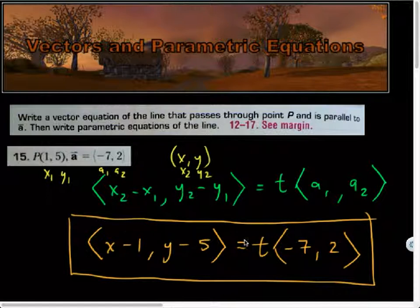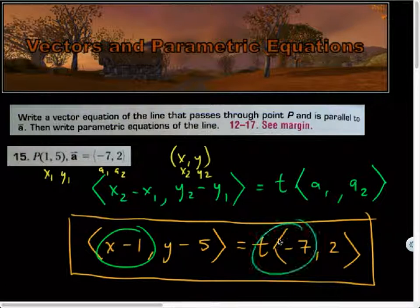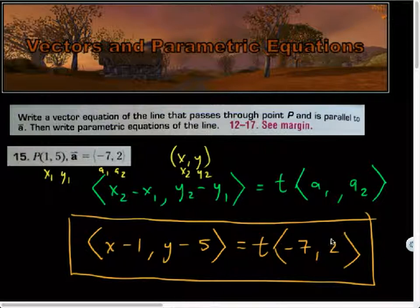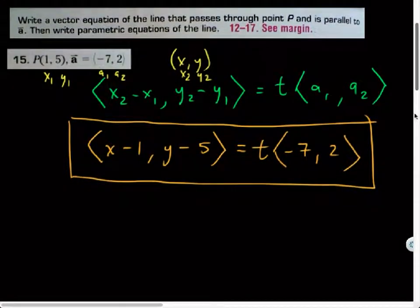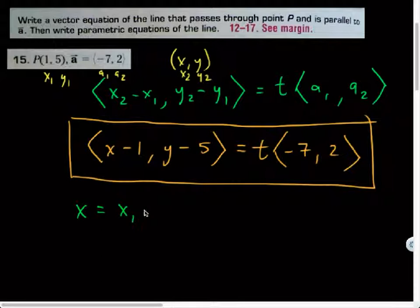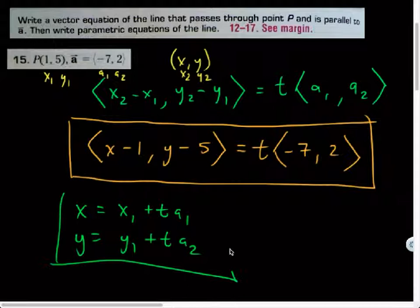But then they also ask us to write the parametric equation of the line. And I technically can do this if I distribute T to both of these and then set this component equal to T times negative 7 and this coordinate equal to T times 2. I could actually solve that on my own, or I can actually use the formulas that we were given.